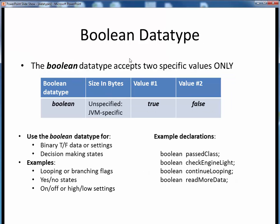Finally, the Boolean data type is used to store the indicated two specific values only, true or false.